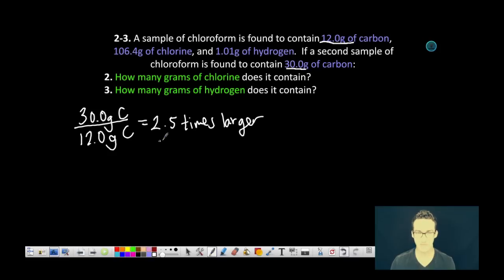So if we take a look at and try and solve for the mass in grams of chlorine, we just take the 106.4 grams of chlorine in the original sample and multiply it by 2.5 to get a mass in the second sample of 266 grams of chlorine. Boom. Boom.